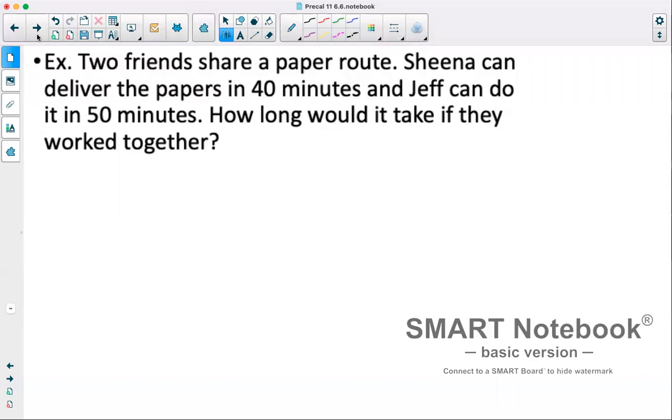I'll arrange this into a bit of a table to help solve it. We know we're given our time, so make that as a heading. Then we have information for Sheena as well as Jeff, and then we're solving for together. We know Sheena can do it in 40 minutes, Jeff can do it in 50 minutes, and together we don't know, we'll just call that T.